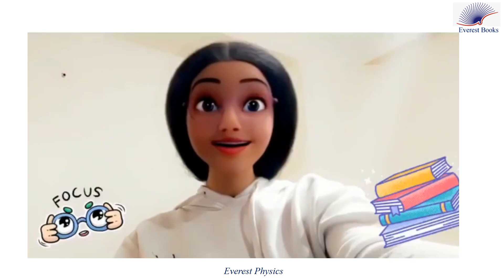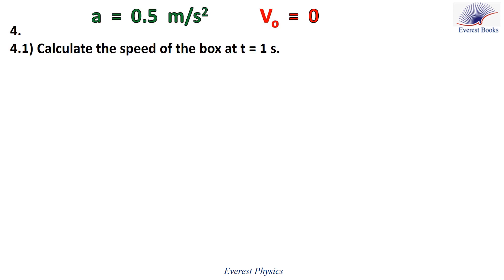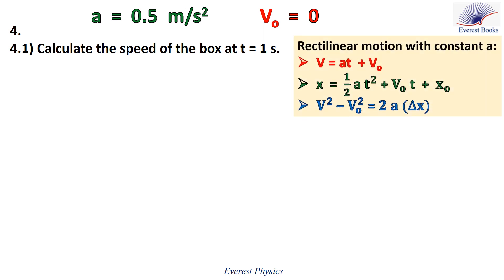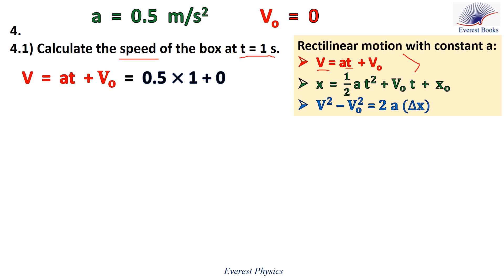Focus, please — this is important. Let's move to part 4.1: calculate the speed of the box at time one second. This is a rectilinear motion with constant acceleration, and we have the three basic equations of this motion. To calculate speed at time one second, we use the first equation, which includes T and V. The acceleration is 0.5 meters per second squared, the time is one second, and the initial speed is zero. Therefore, the speed at time one second equals 0.5 meters per second.